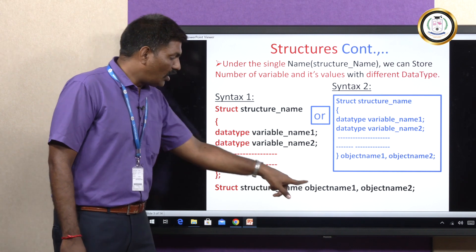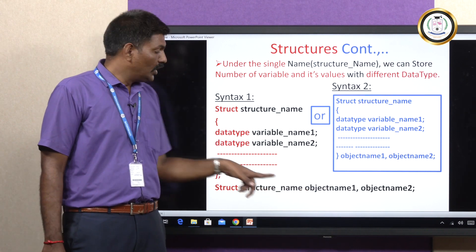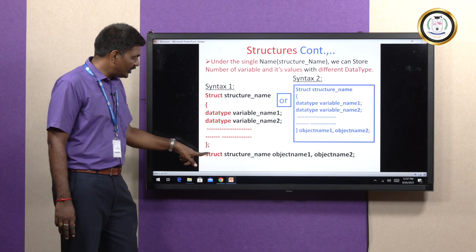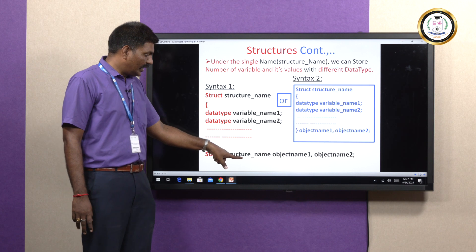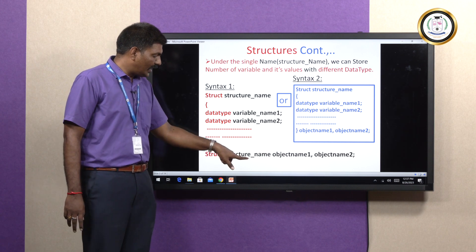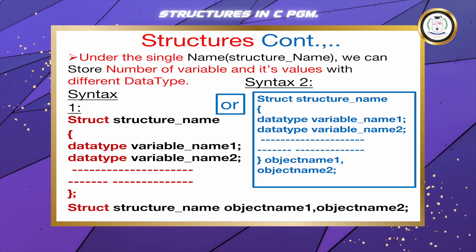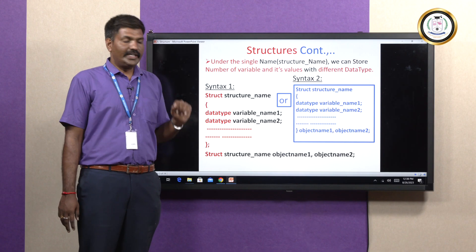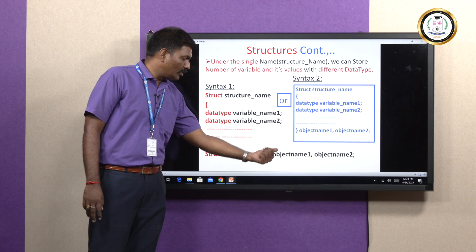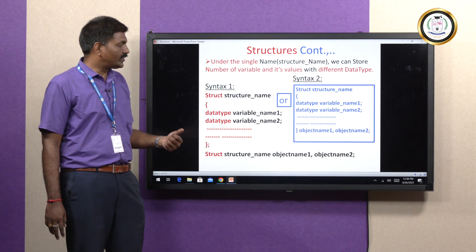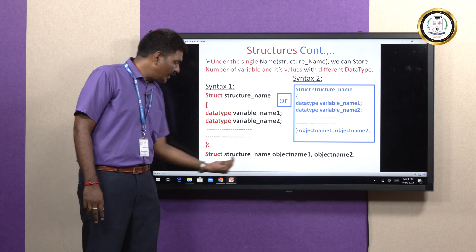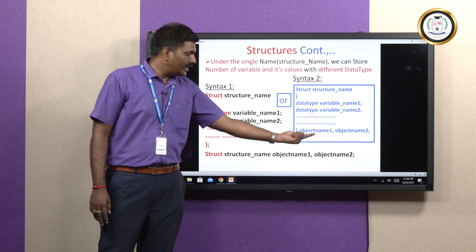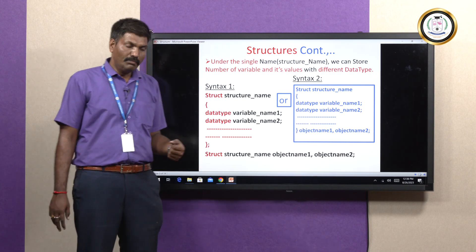We need to create objects to access the member variables. The syntax for object creation is: struct student_detail object_name1, object_name2. If you want to store and read two student details, you write: student1, student2 as the object names. Alternatively, you can create objects directly after the closing brace: object_name1, object_name2.